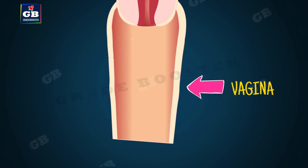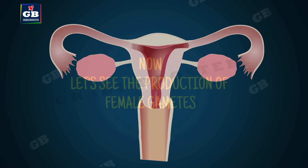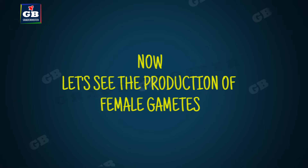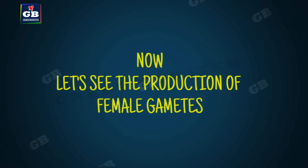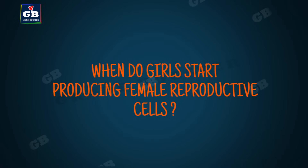The vagina is the passage where sperms are deposited by the penis of the male reproductive system during sexual intercourse. Now let's see the production of female gametes.